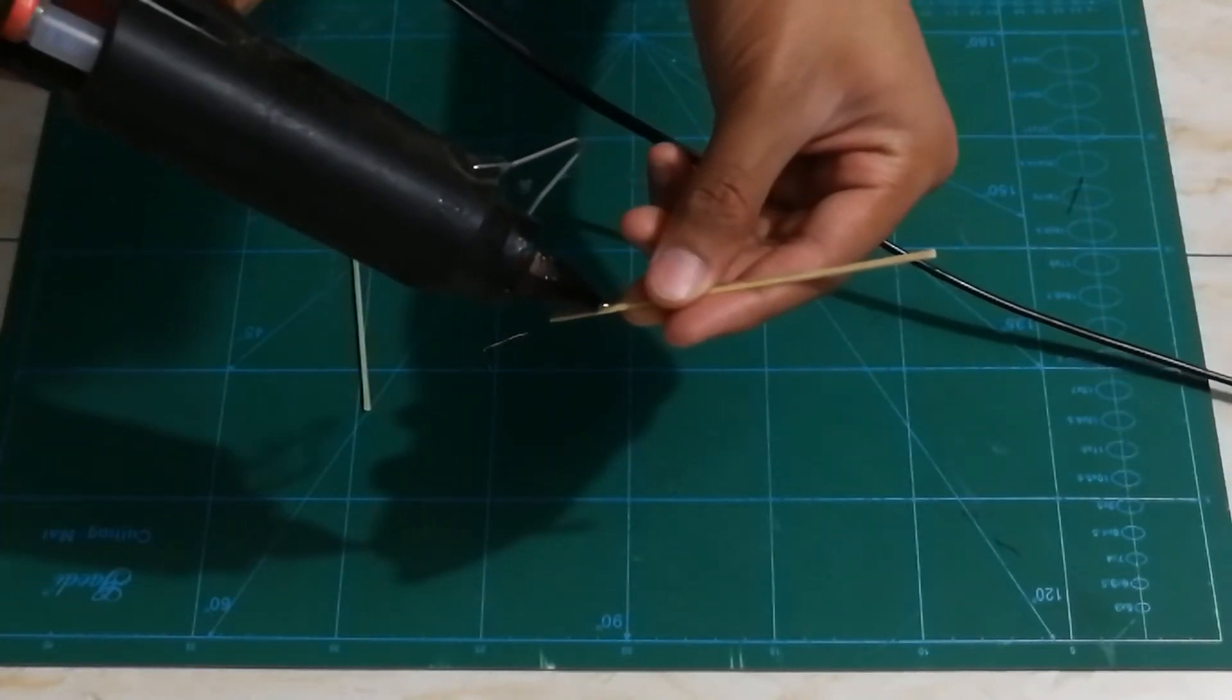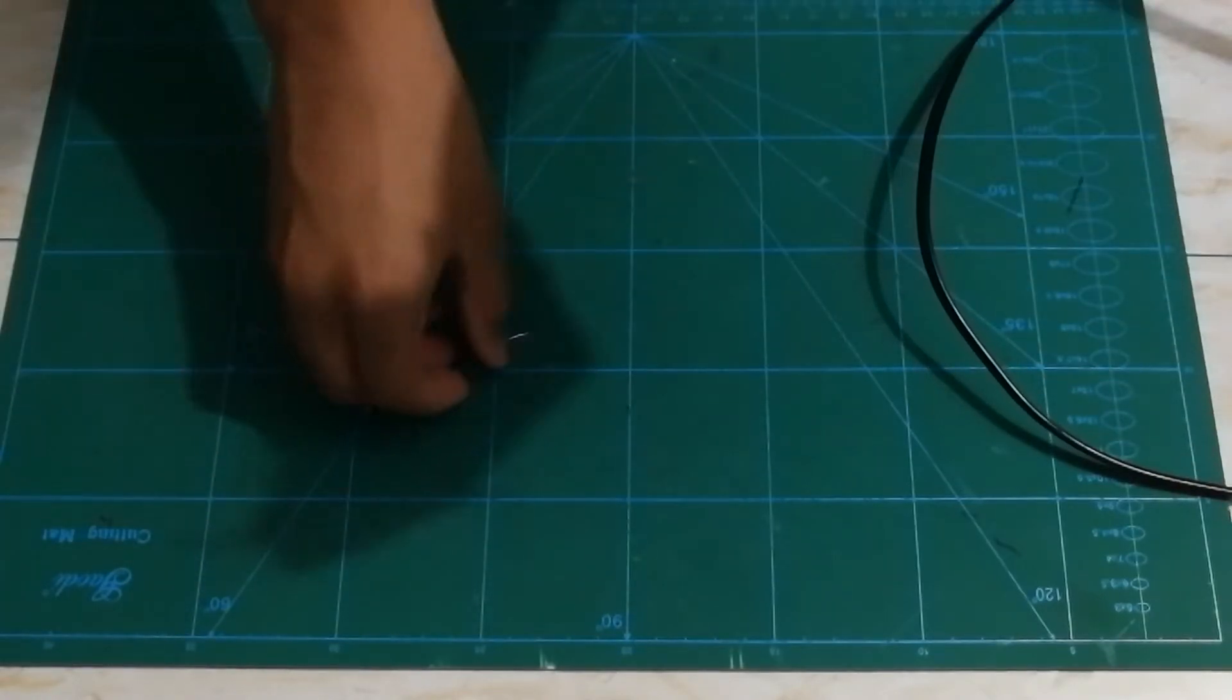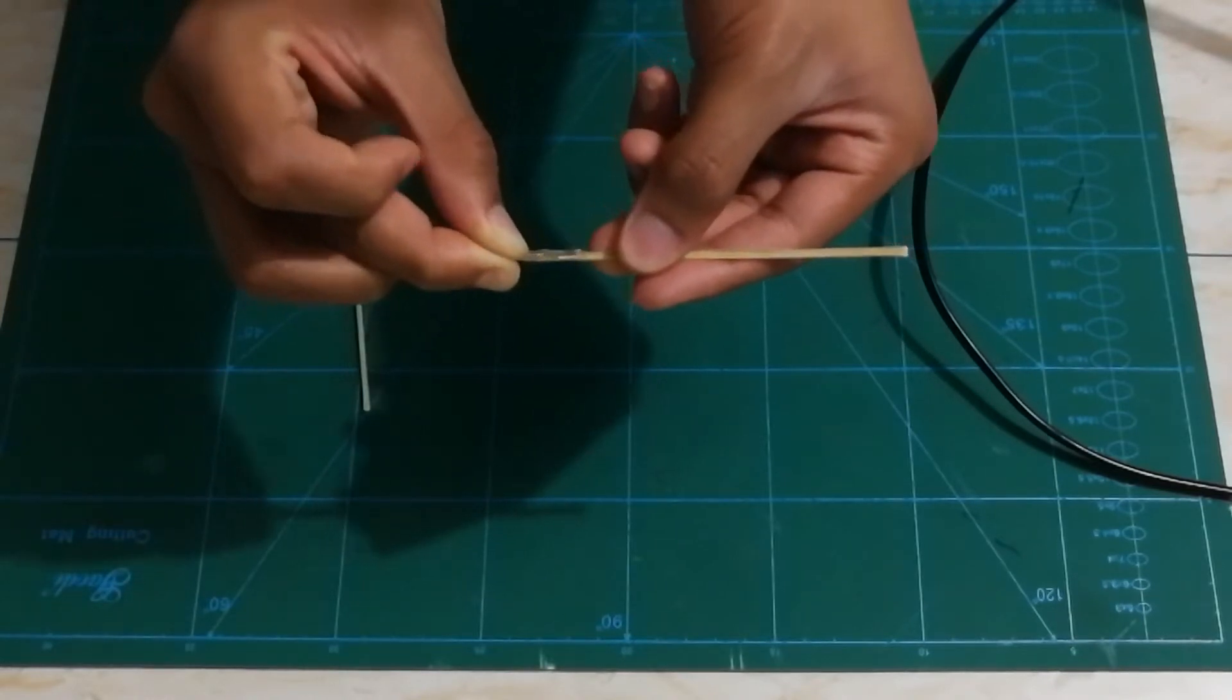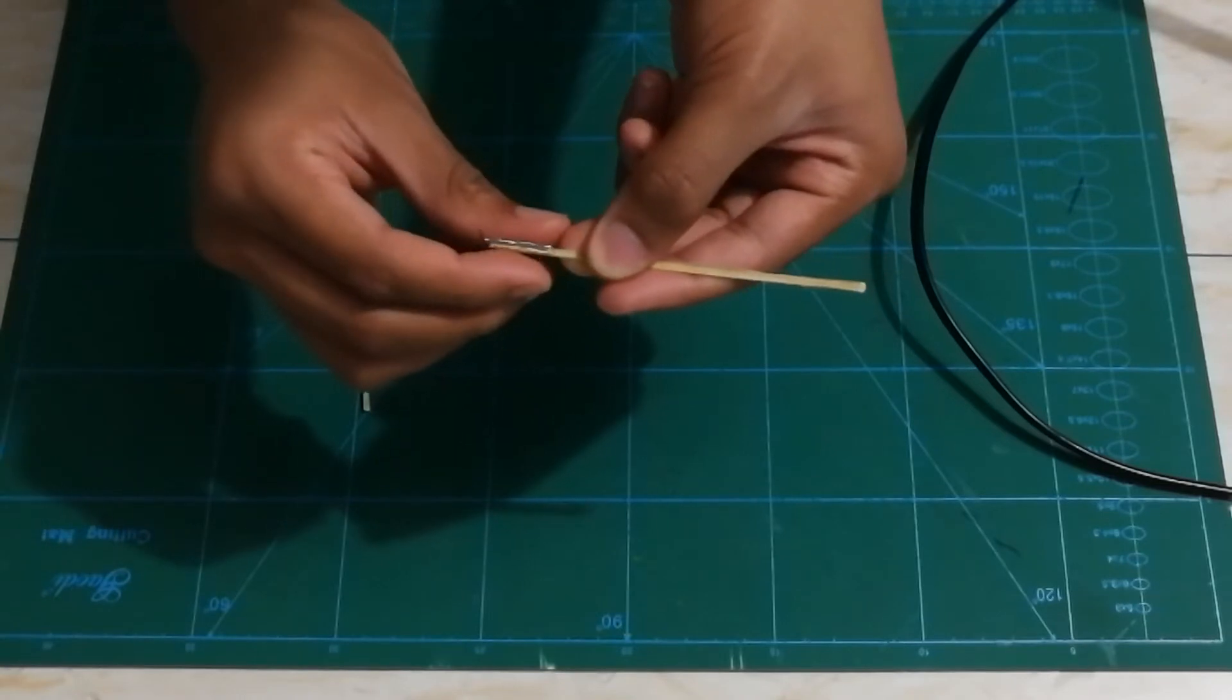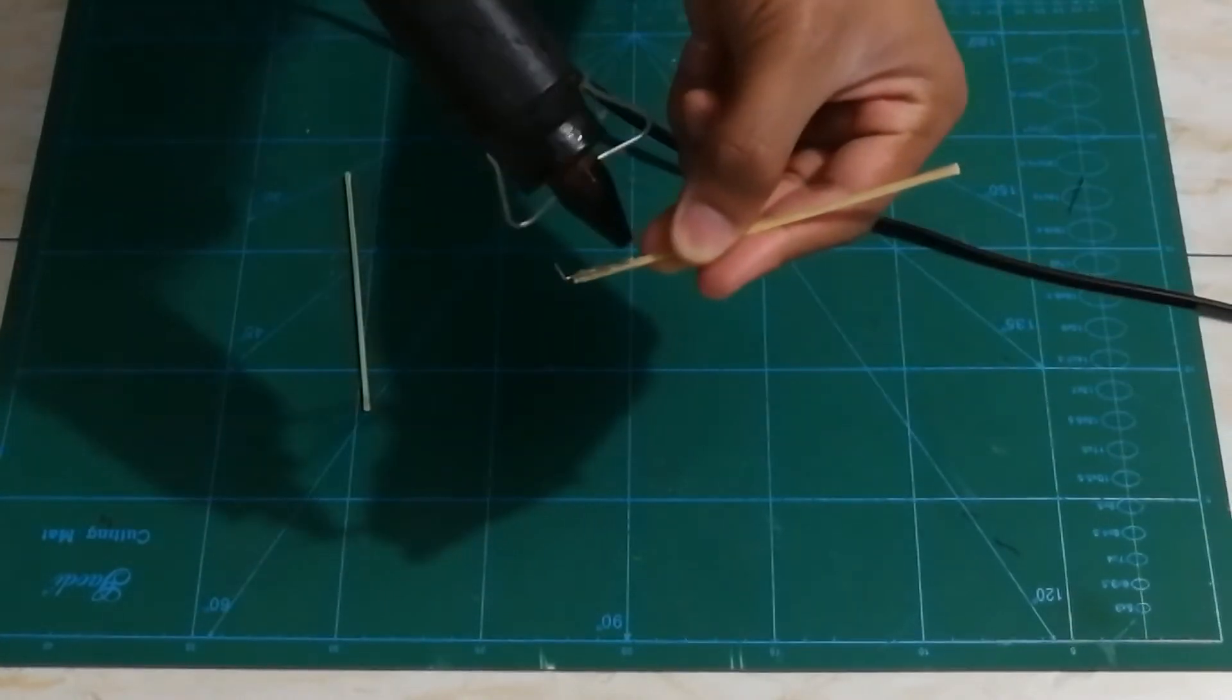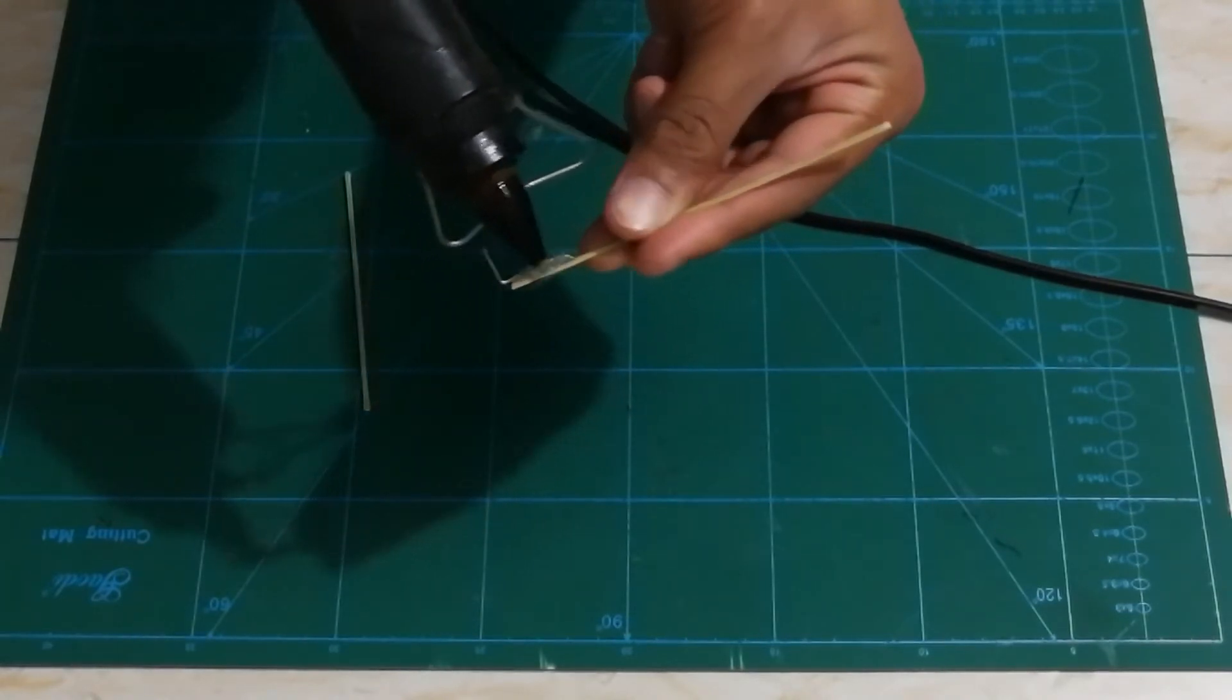Then stick your aluminum wire to the bamboo stick just like this. Now use some hot glue around it just to keep it more supported.